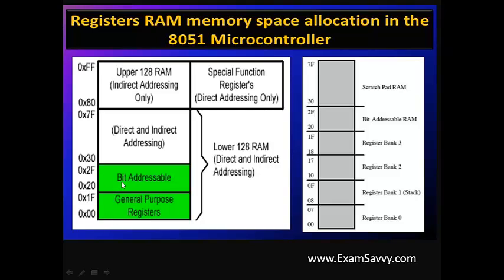The bit addressable area occupies memory locations 20 to 2F. Bit addressable registers will only be stored in this address range. From 30 to 7F, instructions using direct and indirect addressing modes are stored. Only indirect addressing mode instructions are stored from 80 to FF, which is the upper 128 bytes of RAM memory. The region from 30 to 7F supports both direct and indirect addressing, while 80 to FF supports only indirect.